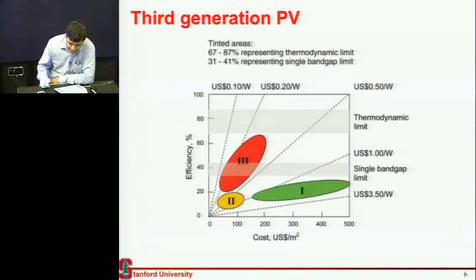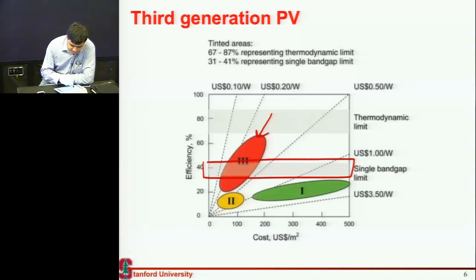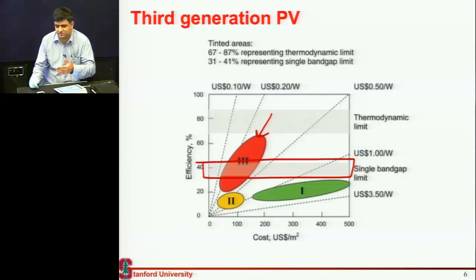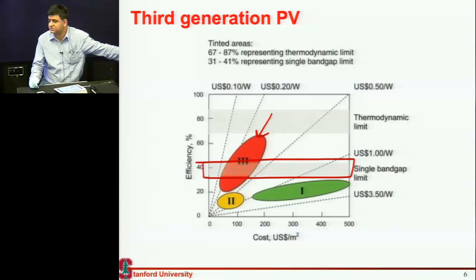The pipe dream here is to achieve very high efficiency. This band represents the Shockley-Quisser limit for different concentrations: for one sun concentration it's 32%, for a thousand suns it's around 41%. When Shockley-Quisser specifically Hans Quisser derived this limit, nobody believed them because cells were only nine or ten percent efficient at that time.